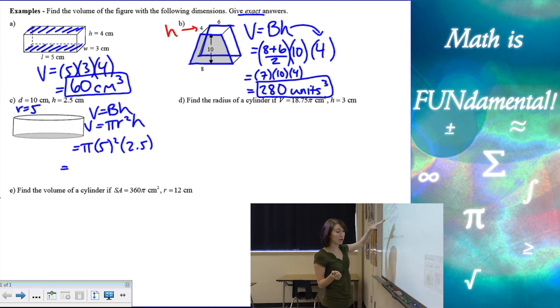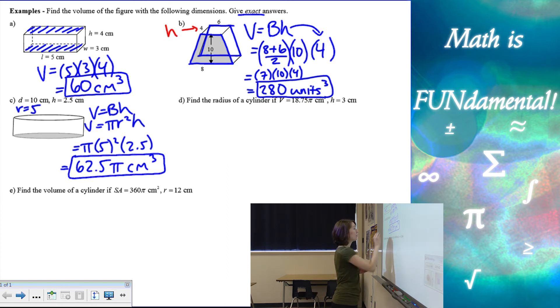You're going to take five squared, which is 25, multiply that by 2.5. Let me just double check my notes here. And we get 62.5 and then leave pi in your answer. And then we have our units centimeters cubed for volume. So remember exact answer. We want to leave pi right there. We don't want to use our calculators to approximate.